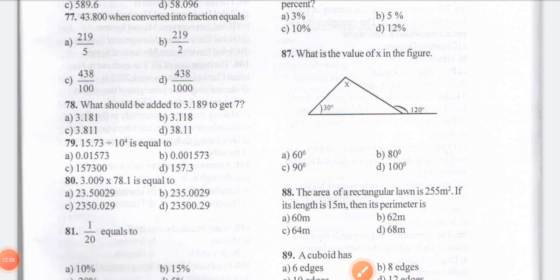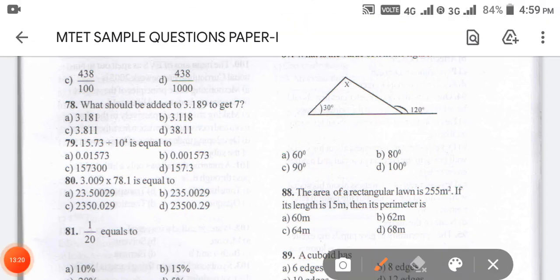Question 78: what should be added to 3.189 to get 7? One way of doing it is you subtract and see. When you subtract 3.189 from 7, you get the answer 3.811. So the answer for 78 is option C — 3.811.